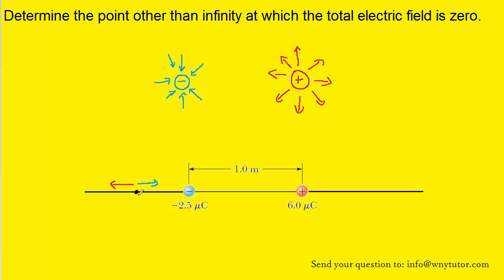Although it might be difficult to see, in this case it is going to work. We are much closer to the negative charge, so one might think its electric field will always be larger. However, even though we are closer to the negative charge, the magnitude of that charge is smaller, which tends to reduce the size of its electric field. So it will be feasible to find a point where the electric field produced by the negative charge is exactly equal in magnitude to the electric field produced by the positive charge.